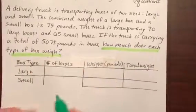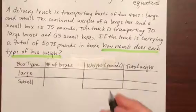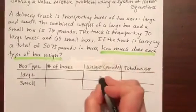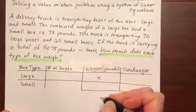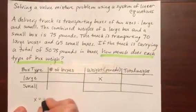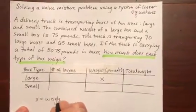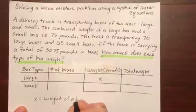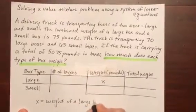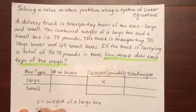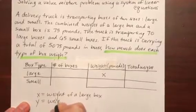We have two different unknowns in this problem and so let's use x to be the weight of large boxes. So x equals weight of a large box and then let's choose y to be the weight of a small box.